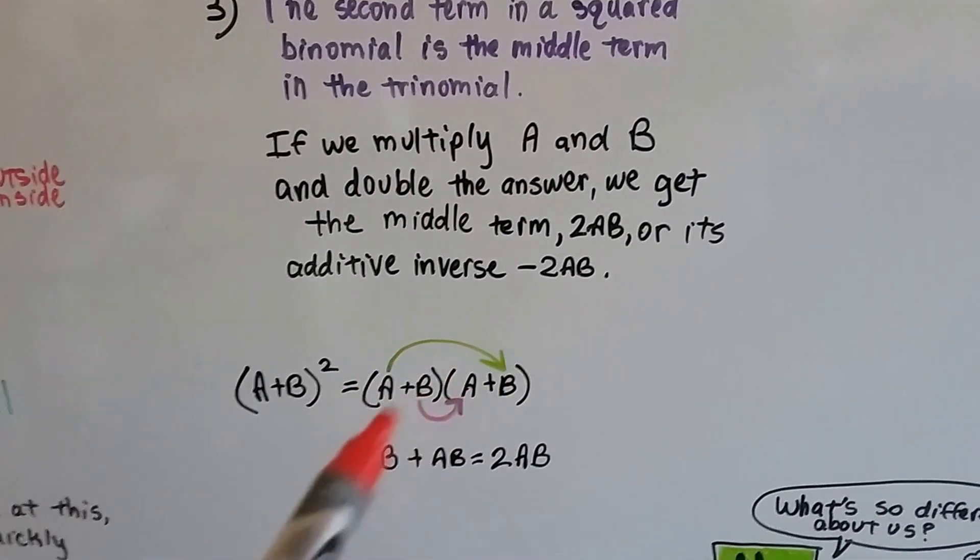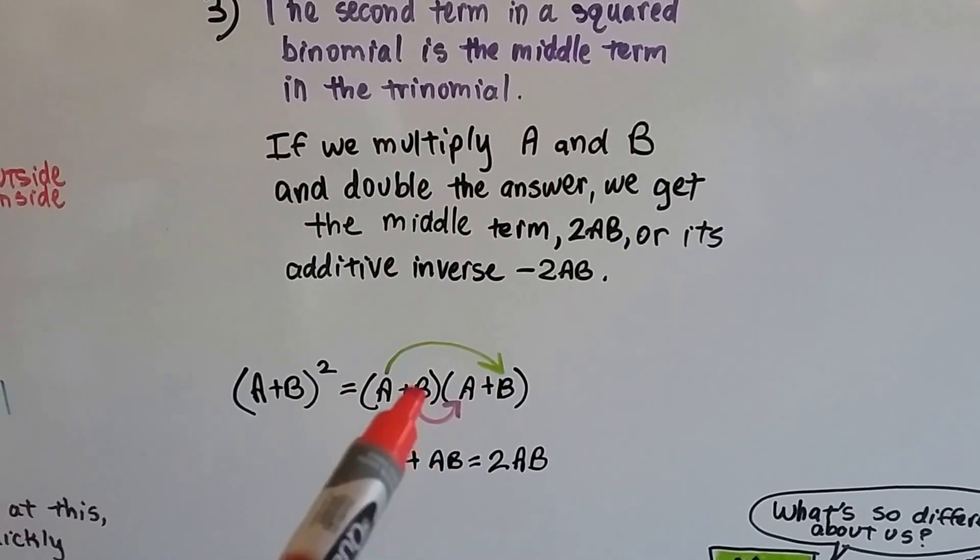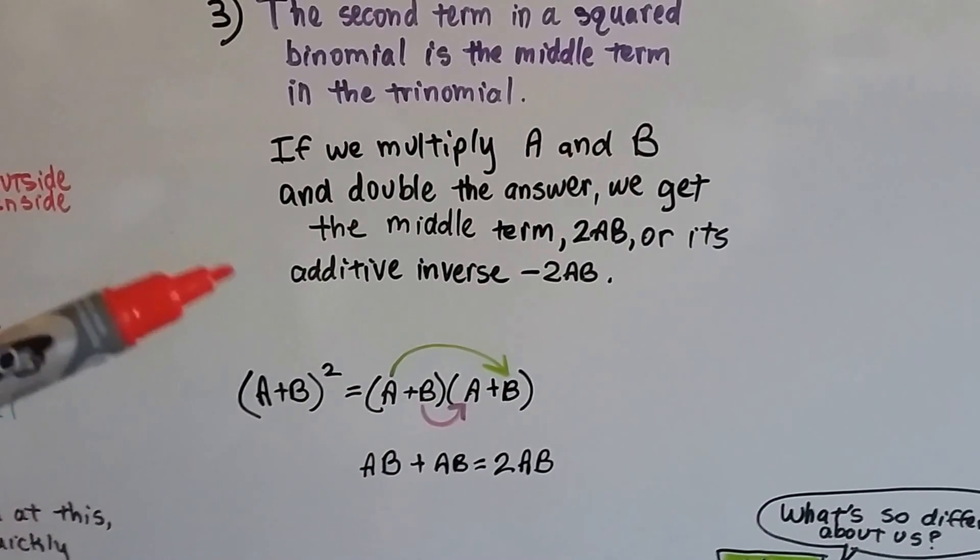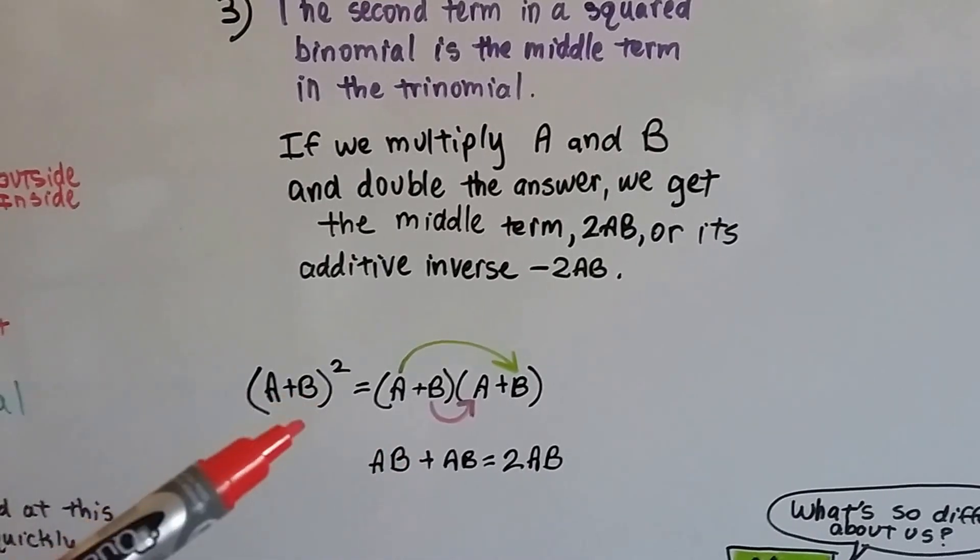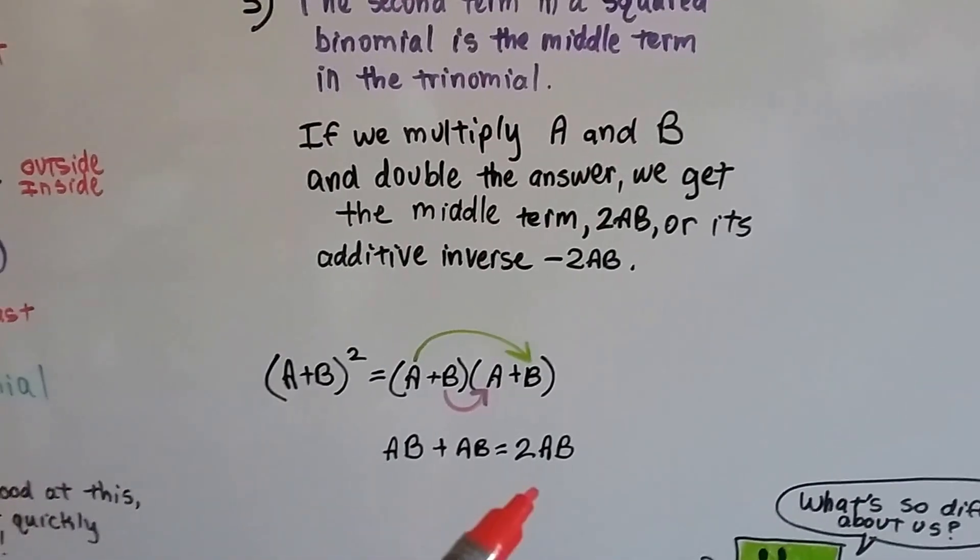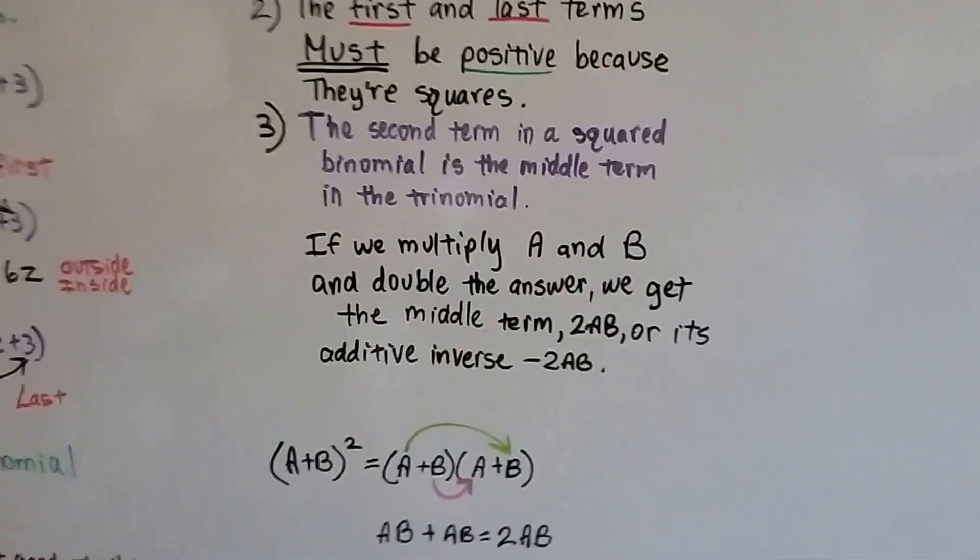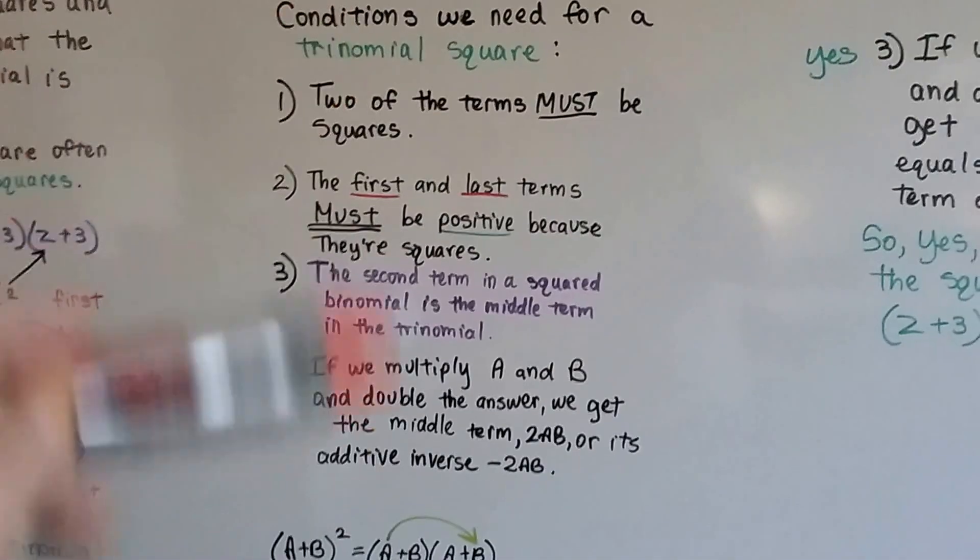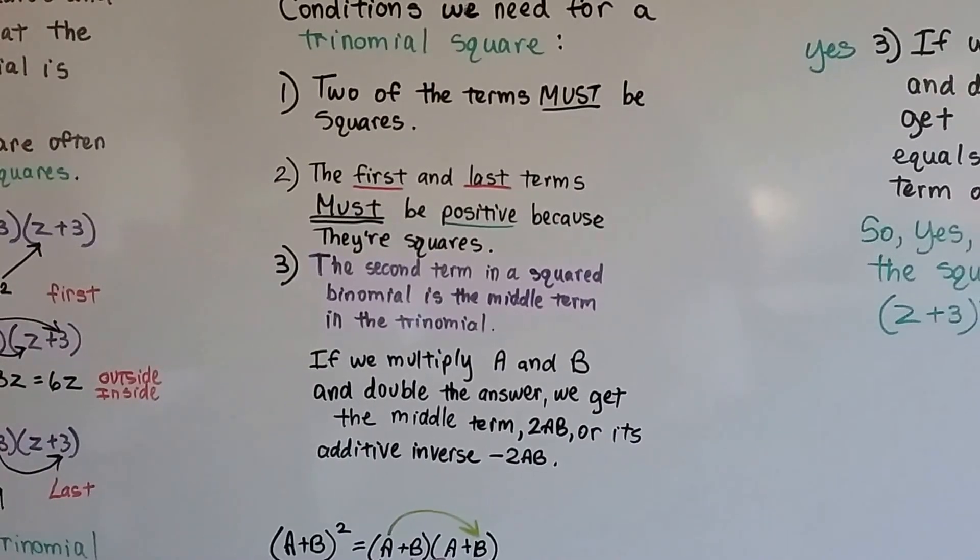If we multiply a and b, we get ab plus ab. We get the middle term 2ab of the trinomial square, or its additive inverse -2ab. So these are the three conditions you should write down that we need for a trinomial square.